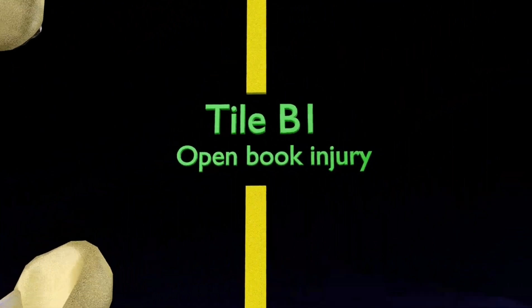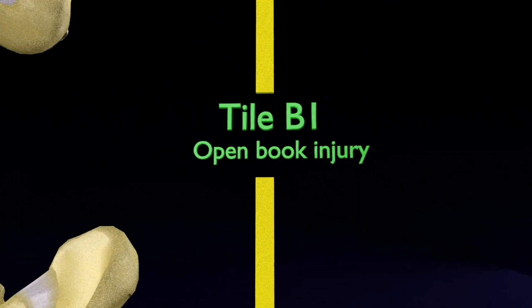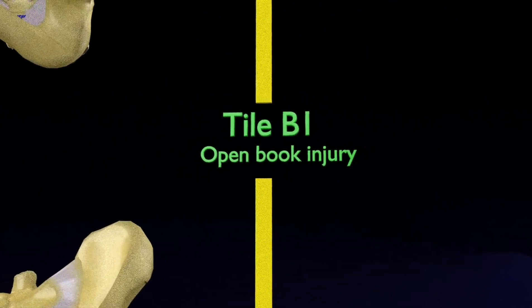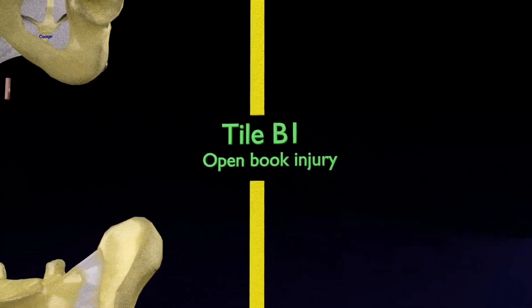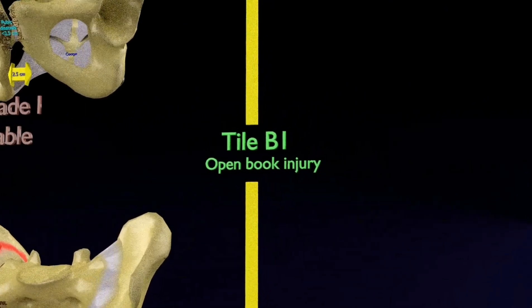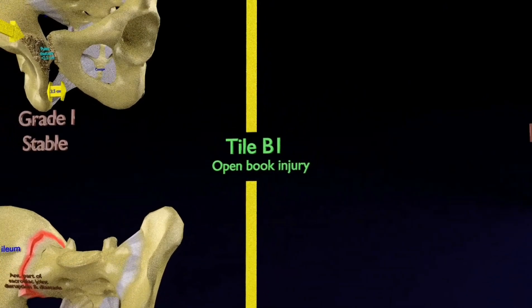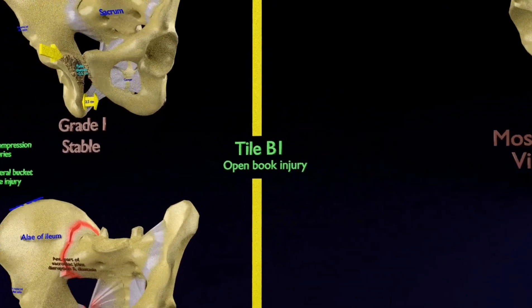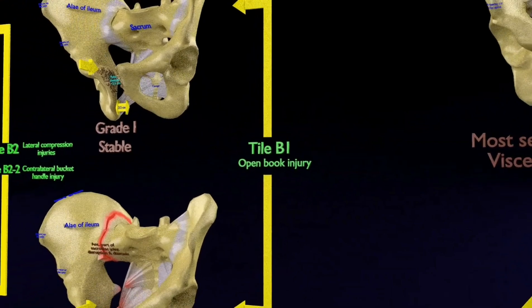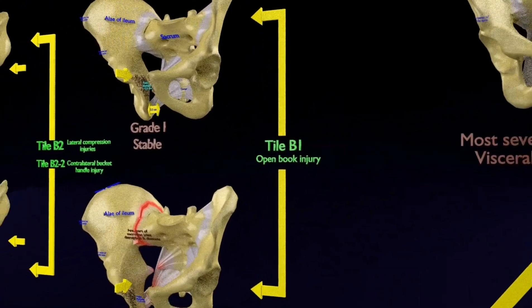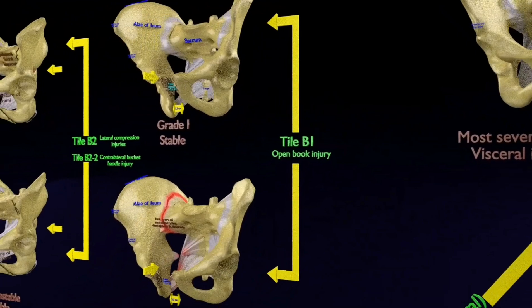The anterior posterior compression, Young and Burgess classifications are included within the Tile type B1 fractures, which are also called open-book injuries. Open-book pelvic injuries result from an anterior posterior compression injury to the pelvis and result in a combination of ligamentous rupture and or fractures to both the anterior and posterior arches.